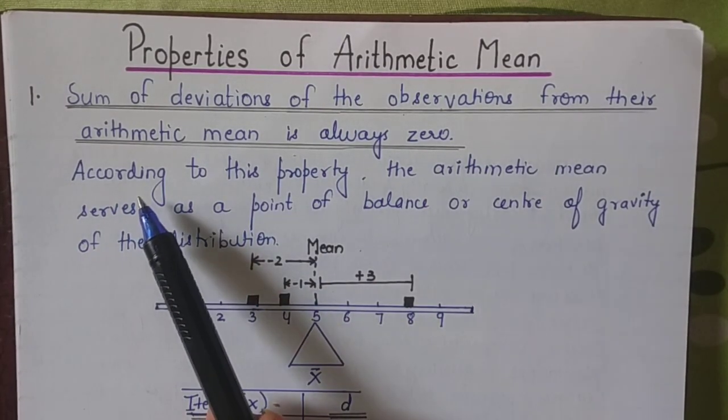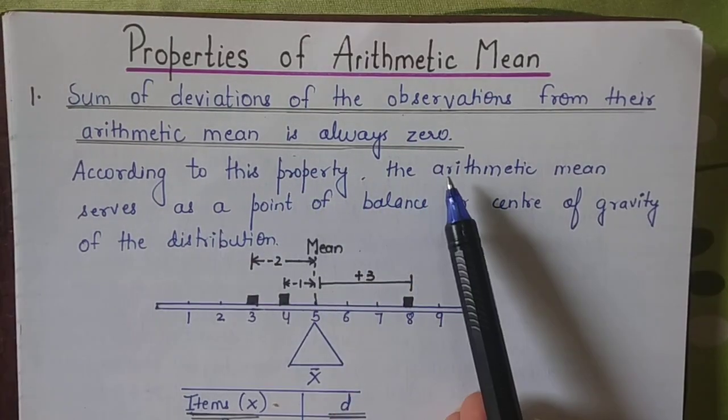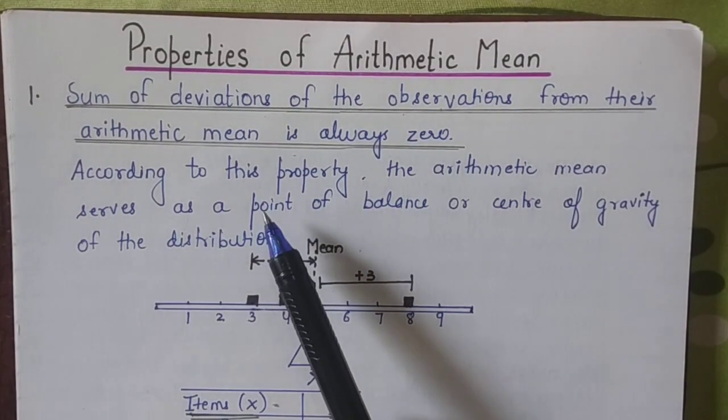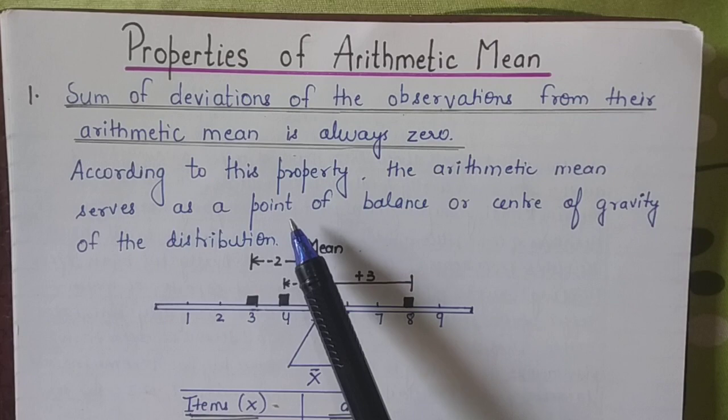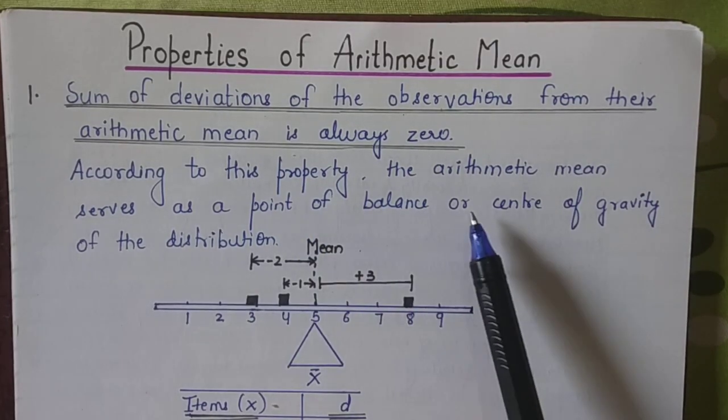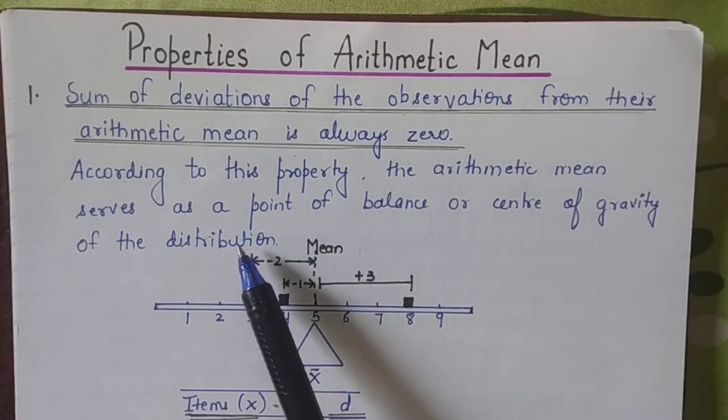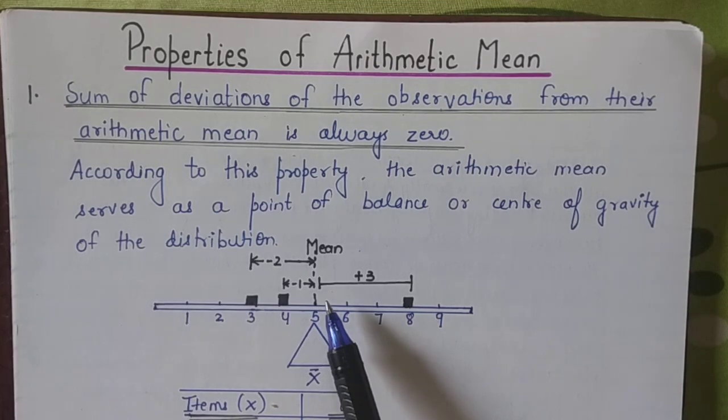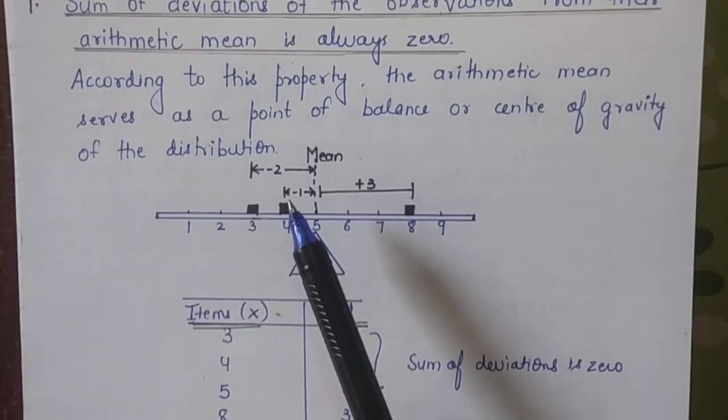In other words, we can say that according to this property, the arithmetic mean is a center point, you can say that point of balance or center of gravity of the distribution.